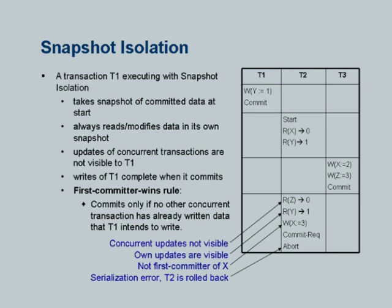Logically, when a transaction starts, it gets a snapshot. It does all its computations in the snapshot. If it wants to do a write, it does a write on the snapshot and reads from the snapshot. When it wants to commit, that is when all its writes will have to be done back to the database. At that point, it will check if there was a concurrent transaction which had already written that item. If so, it rolls back. If the test passes for all the data items it wants to write, it is allowed to commit. That is the first committer wins version of snapshot isolation.